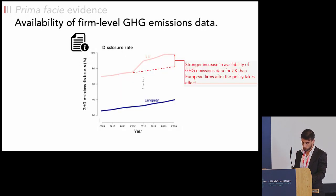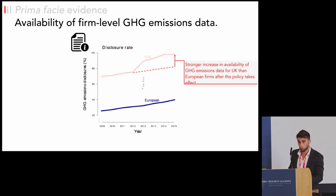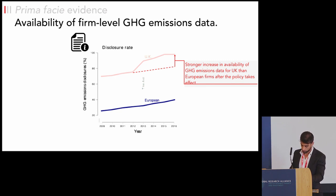Before the regulation — on the left of the grey line — we see similar trending disclosure rates. In 2013, there is a change in the trend for UK firms, such that by 2016 almost 100% of UK firms report their emissions, compared to only 40% for European firms. So we have this shock in availability and comparability.